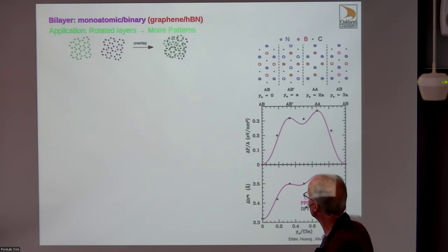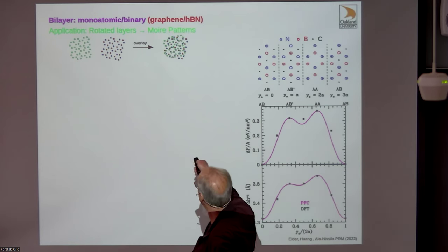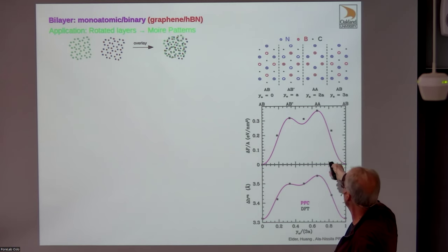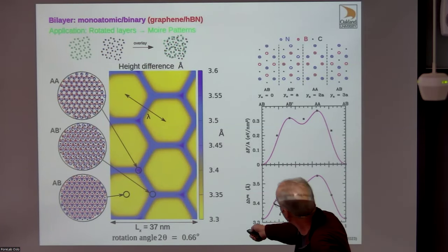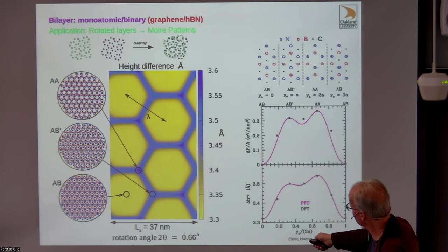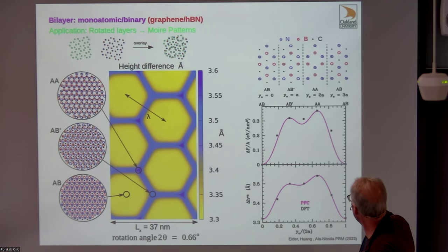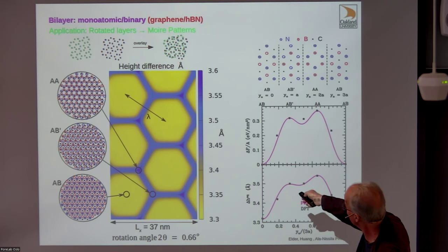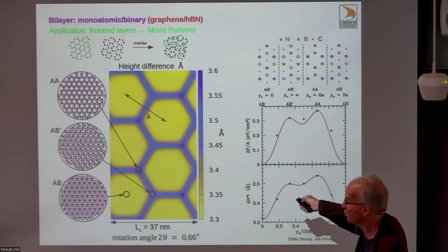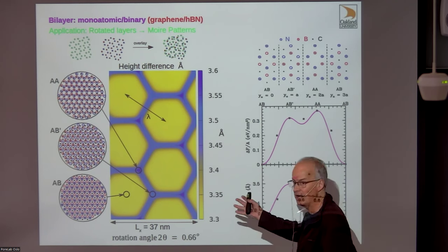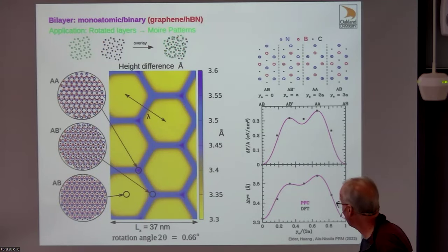The last thing I'll talk about is what happens when you rotate the two layers. If you just overlay two rotated systems, you'd naively expect roughly equal populations of three different stacking states. But the lowest energy AB state pushes aside the others, producing moiré patterns. The yellow regions correspond to the AB state, one type of junction corresponds to the AB-prime state, and the AA junctions are higher energy. Three of the six junctions are AA and three are AB-prime.